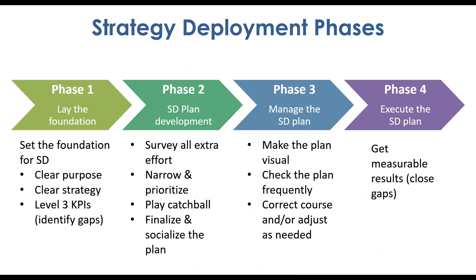The strategy deployment process has four phases. Phase one: assuming you have clear purpose, clear strategy, and clear KPIs. Phase two: do the homework — narrow and prioritize, play catchball, then finalize the plan. Phase three: make the plan very visual, check it very frequently to make sure everyone's on course, and adjust as needed. Phase four: as you're executing, you're getting results and closing the gaps identified. Getting clarity around this is one of the most powerful things any organization can do.